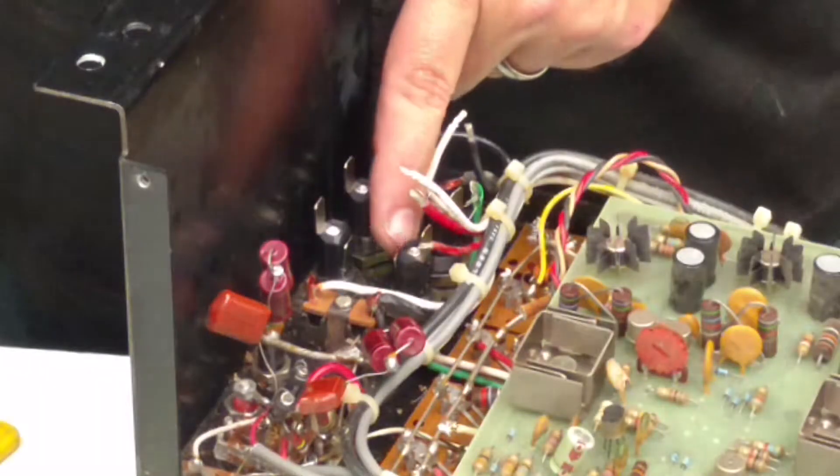So now I'm just going to bend these tabs over real quick, pretty simple. Just bend these over so they overlap, touch each other. Double check, make sure I've got my wire connections correctly, the wire colorings, I know where everything goes. I'm pretty sure, but I will double check two or three times.